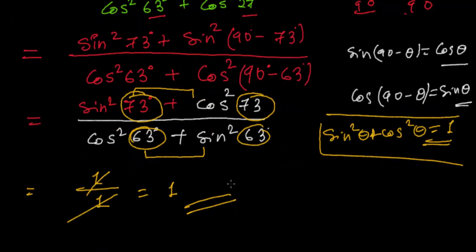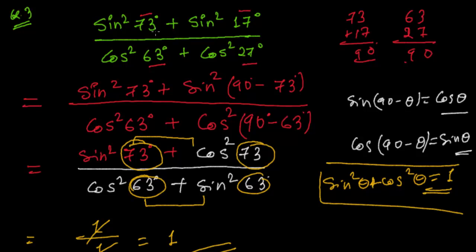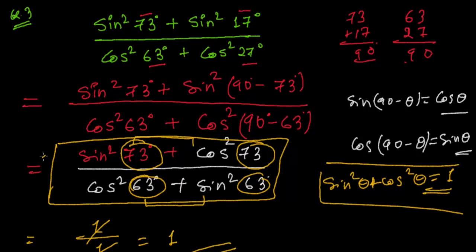To summarize the strategy: in these evaluation problems, we convert trigonometric ratios into the same form — sine into cosine or cosine into sine — to create sin²θ + cos²θ = 1, or sec²θ − tan²θ = 1, or cosec²θ − cot²θ = 1. We always convert all expressions into an identity form and then apply it. Keep watching for more videos — bye!